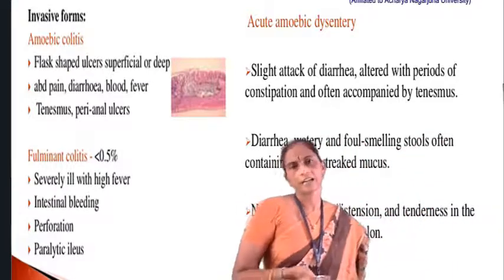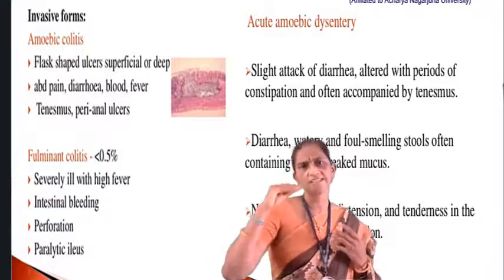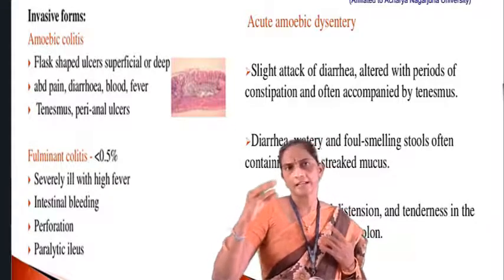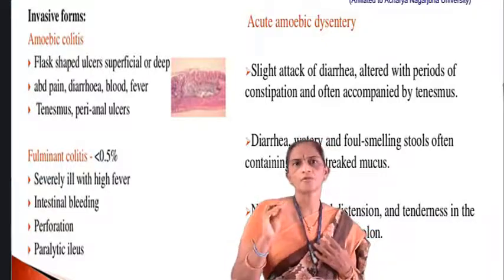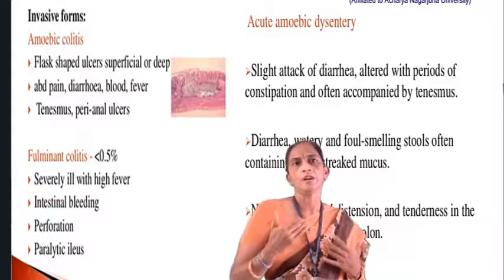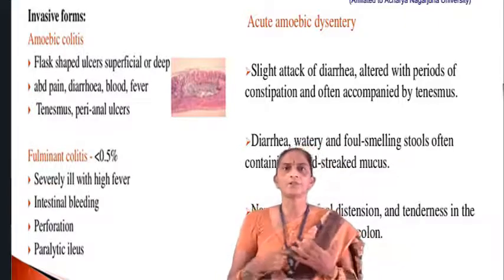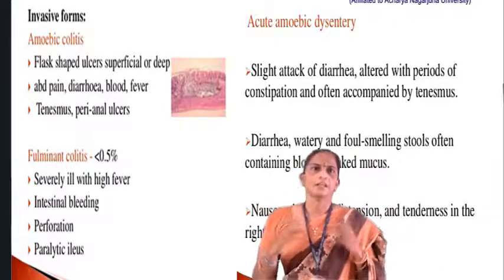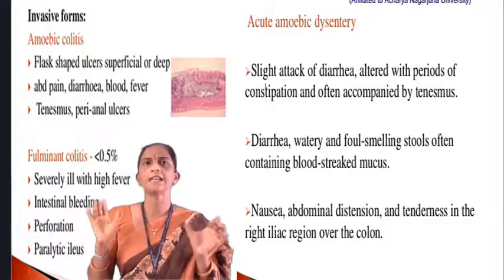In amoebic dysentery the stool is very thick and viscous with blood streaks — unlike rice water diarrhea which is a symptom of cholera. Trophozoites cause perianal ulcers and intestinal bleeding. Sometimes it may cause high fever and perforation — making holes in the intestine — leading to paralytic ileus, which is paralysis of the intestine. Flask-shaped lesions on the intestine are highly painful.